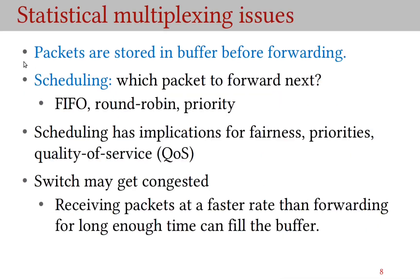As mentioned, packets are stored in a buffer before forwarding. Switches and routers need to decide which packet to forward next — each node makes this forwarding decision independently on a packet-by-packet basis. Common scheduling policies are FIFO (first in, first out), round robin, and priority. In FIFO, packets are forwarded in arrival order. It is possible that some sources may get an unfair share if FIFO is used. FIFO also does not distinguish between time-sensitive packets and those for which delay is not important.